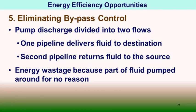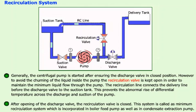Recirculation lines are essential for large-capacity pumps to prevent churning when the discharge valve is closed. Minimum recirculation is incorporated in boiler feed pumps and CEP. When the discharge valve is gradually opened, the recirculation valve is gradually closed to regulate flow. Recirculation is necessary for startup and priming; otherwise the system cannot be run.